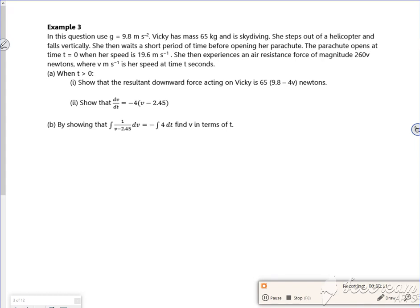Vicky has a mass of 65 kilos and is skydiving. She steps out of her helicopter and falls vertically. She then waits a short period of time before opening a parachute. The parachute opens at time T is zero, where her speed is 19.6. She then experiences air resistance of 260V.